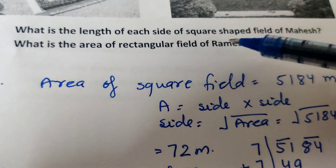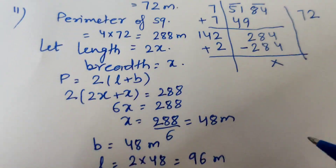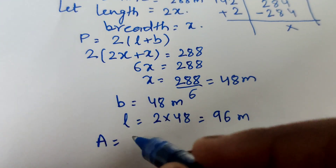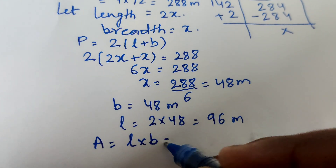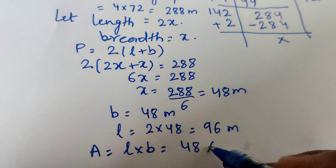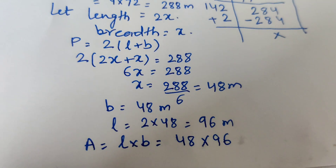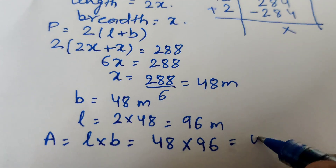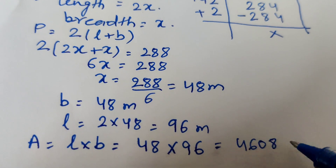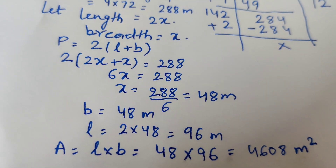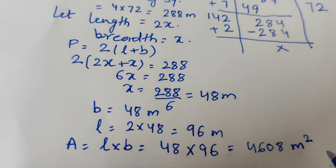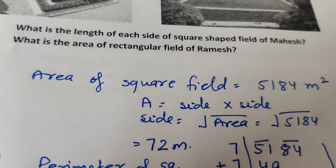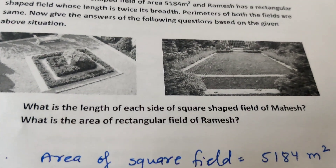Now find the area of the rectangular field. Area equals length × breadth = 48 × 96 = 4608 square meters. Therefore, the area of the rectangular field is 4608 square meters, and the side of the square field is 72 meters.